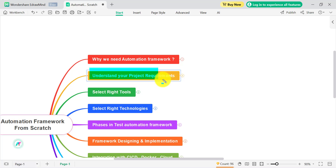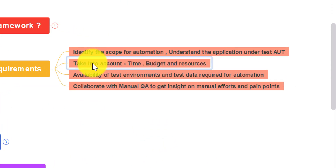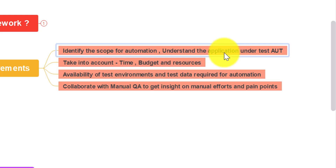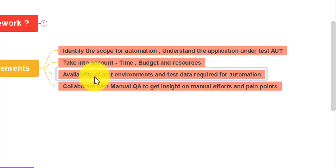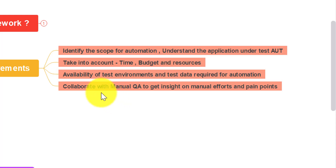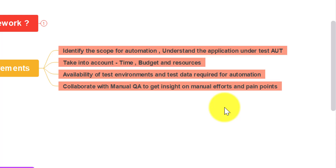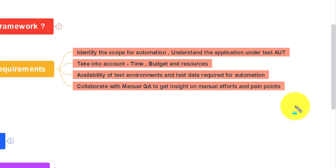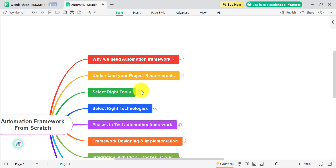Before starting the design of the automation framework, we need to understand the project requirements first. You should identify the scope for automation, understand the application under test (AUT), take into account your time, budget, and required resources, check for test environment availability, check for the test data required for your automation test cases, and collaborate with the manual QA team to understand their manual efforts and pain points. Test cases that take more time should be automated on priority first.